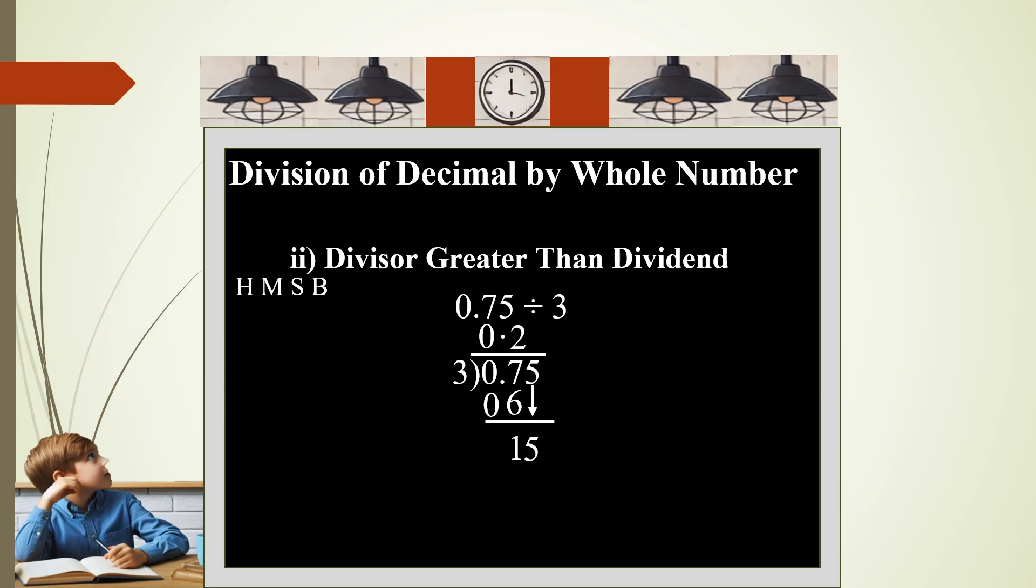Bring down 5, you get 15. 3 will go in 15 five times, and 3 times 5 is 15. Subtract and you get 0. So the answer here is 0.75 divided by 3 is 0.25. You can check the answer by multiplying divisor and quotient; you have to get the dividend.